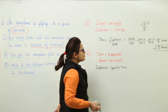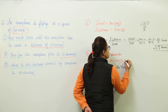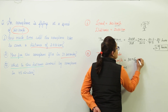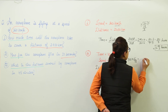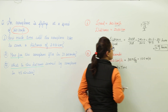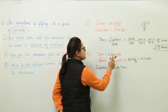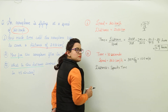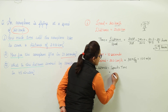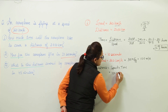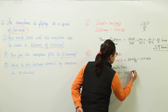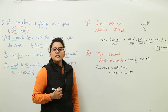We can either convert 10 seconds to hours or convert the speed to meters per second. I am converting the speed to meters per second by multiplying 360 by 5/18, which gives 100 meters per second. Now time is in seconds and speed is in meters per second — the units match. Placing into the formula: 100 multiplied by 10 gives 1000 meters as the distance traveled.